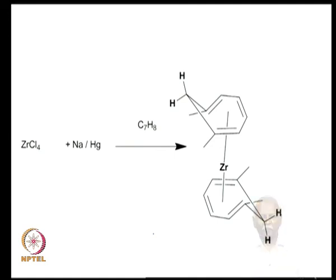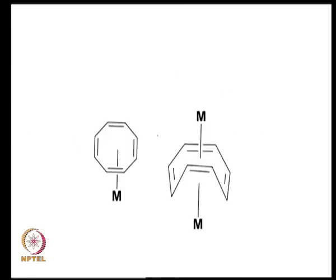An example of a zirconium triene complex can be made by reacting two cycloheptatrienes with zirconium(IV). Since zirconium has only 4 electrons, this yields a 16-electron complex. The zirconium is reduced from the +4 oxidation state in the presence of the neutral C7H8 ligand, generating a metal triene complex.